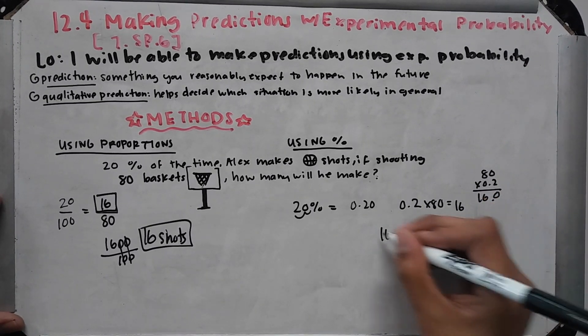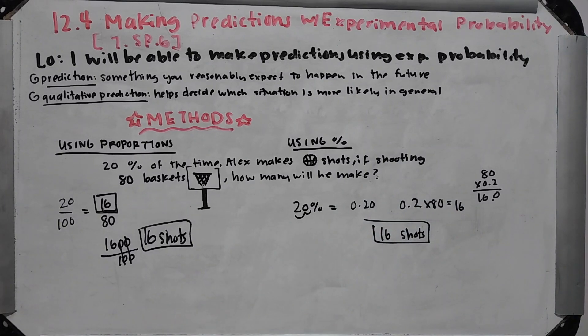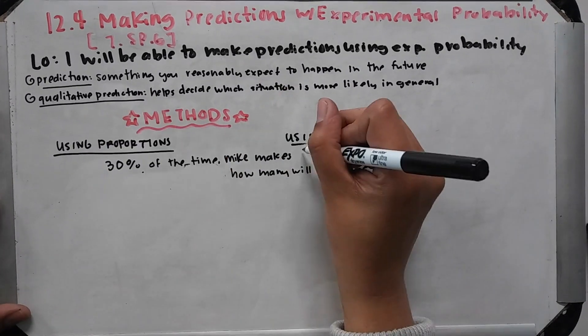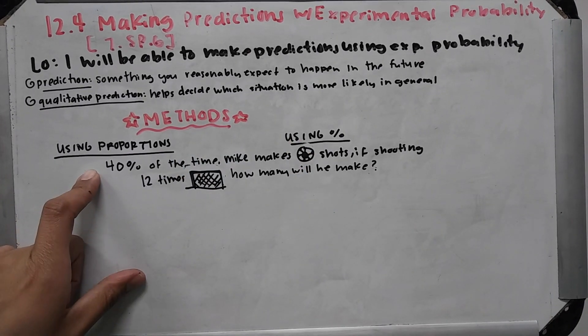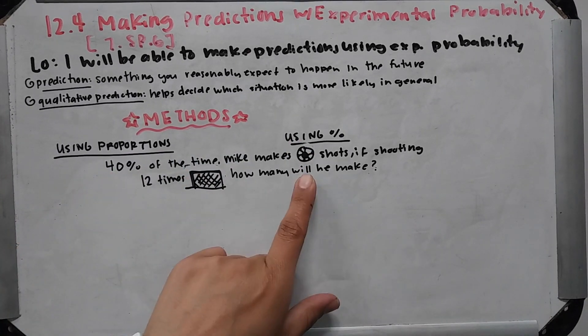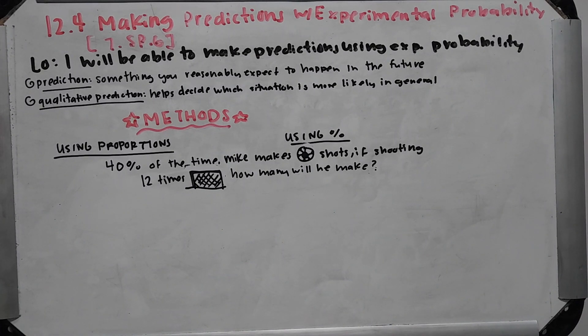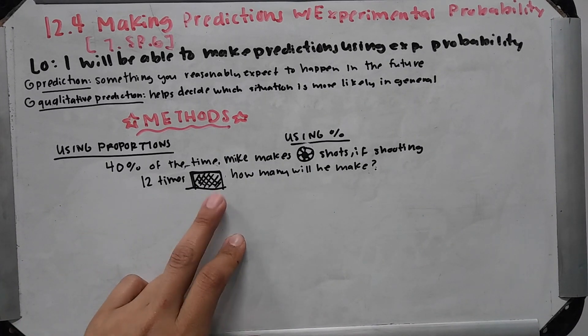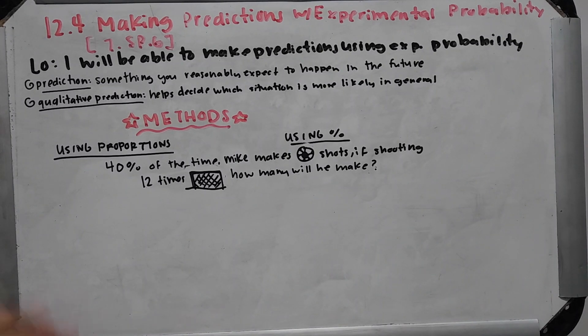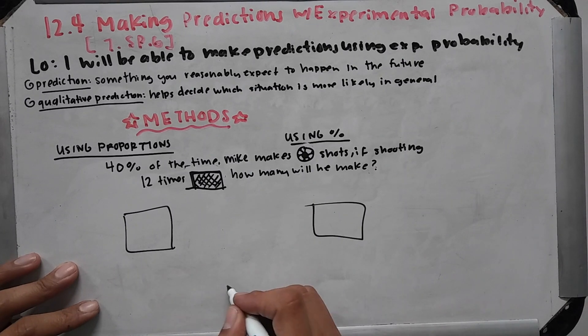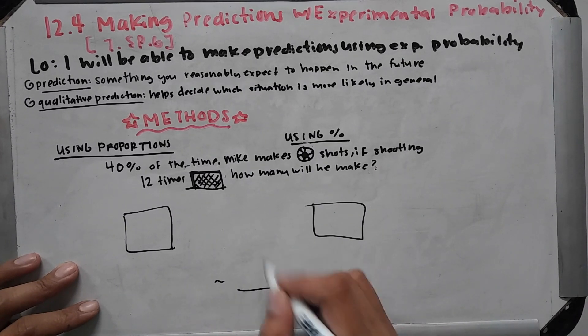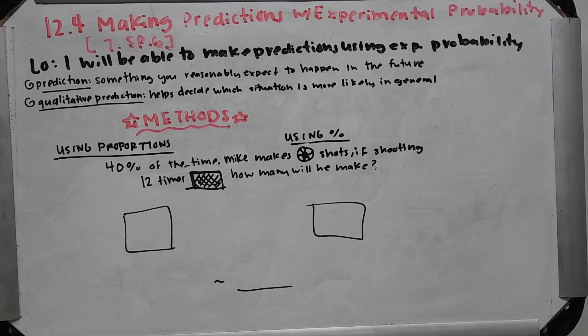So let me give you one to do. This one: 40% of the time Mike makes the shots that he shoots in soccer. So if shooting 12 times in the goal, how many times will he make those? You can use proportions or you can use the percentage way, and just tell me about how many times he will make it. If it's a decimal, make sure that you round down because you cannot say he's gonna score 3.5 goals, right? It's just 3 goals.